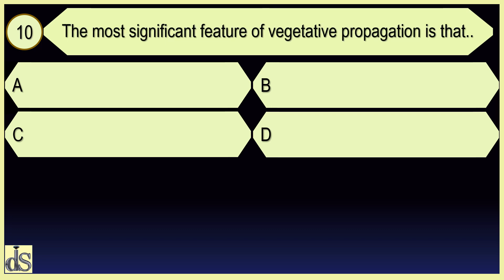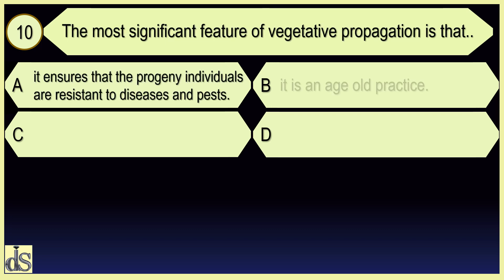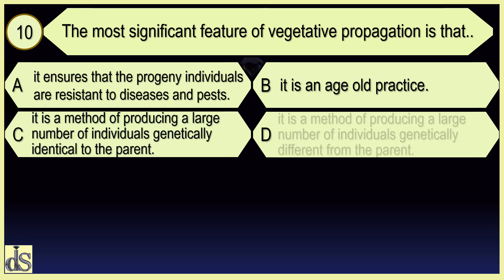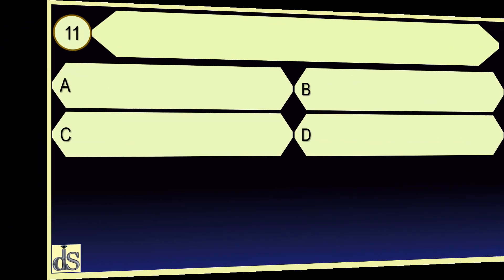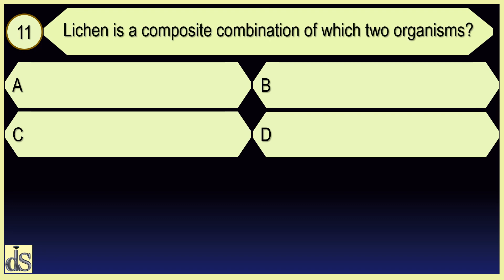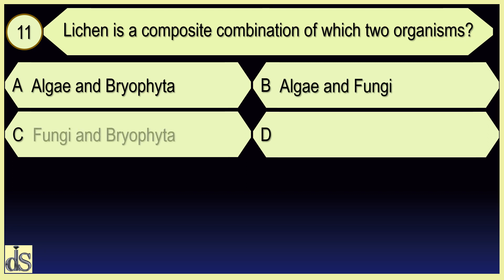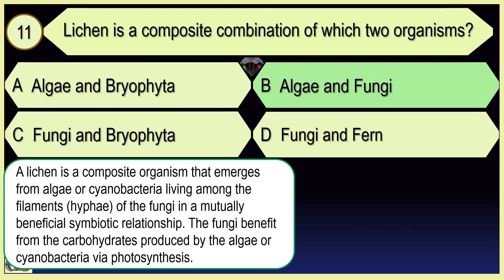The most significant feature of vegetative propagation is that it is a method of producing a large number of individuals genetically identical to the parent. Lichen is a composite combination of which two organisms? Algae and fungi.